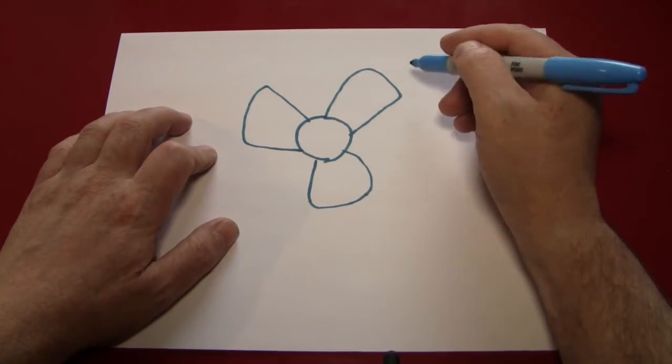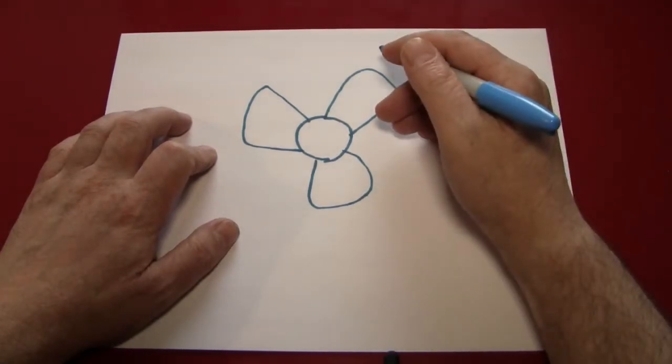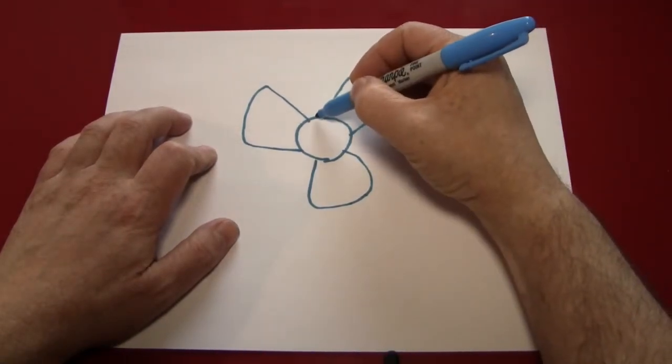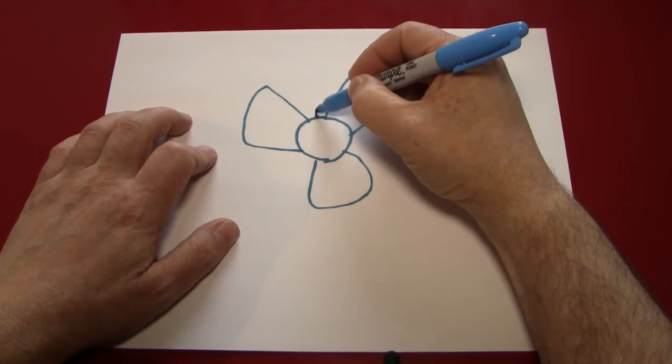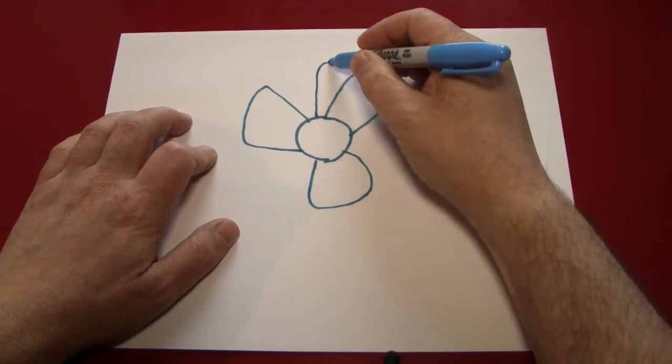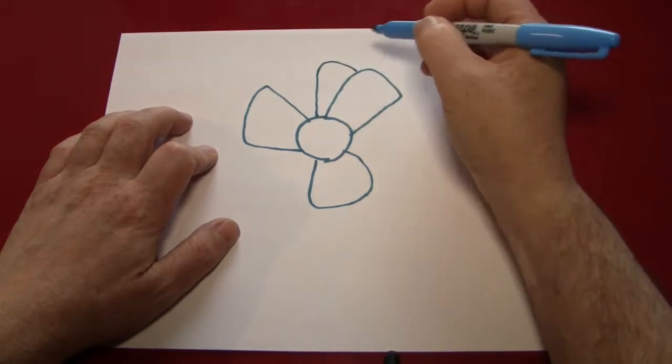Next, we're making the secondary and third rows by coming between the petals we already drew and making little half petals.